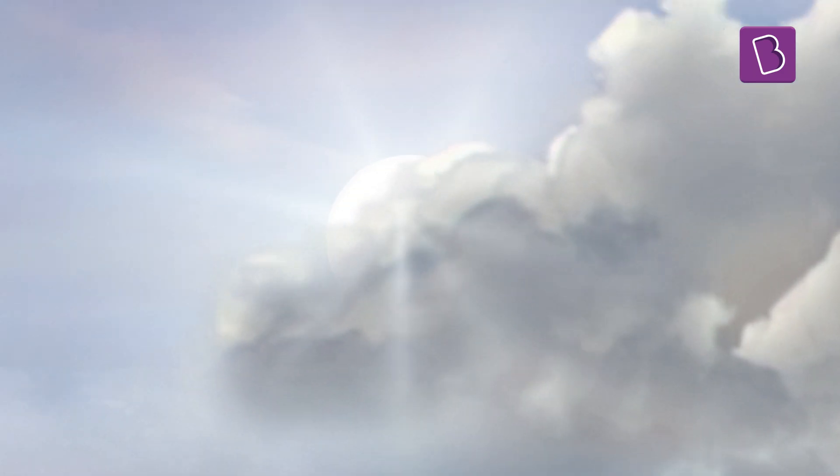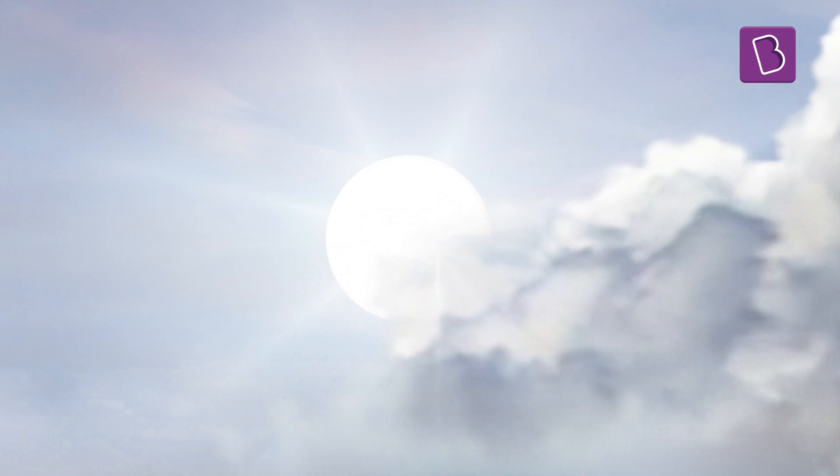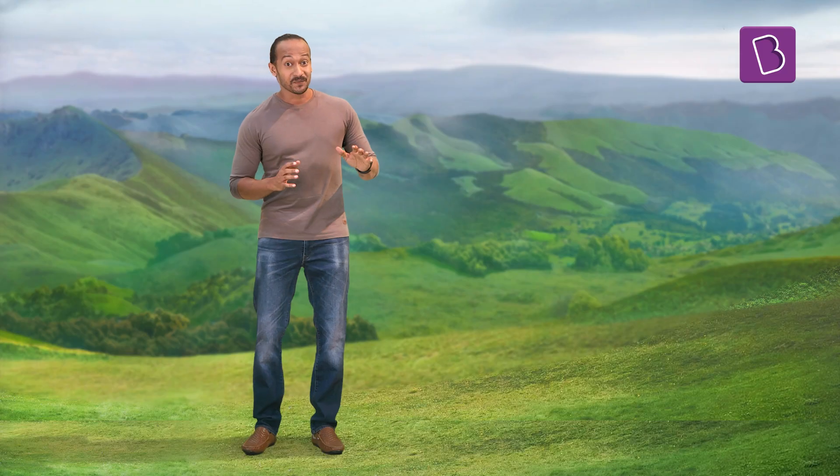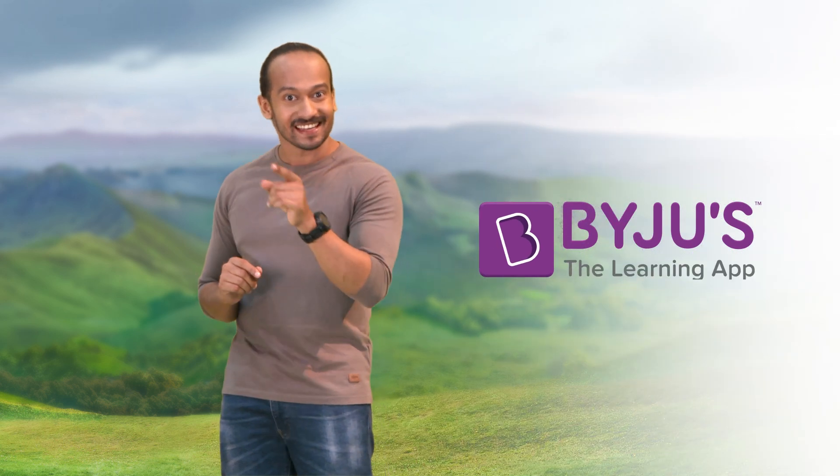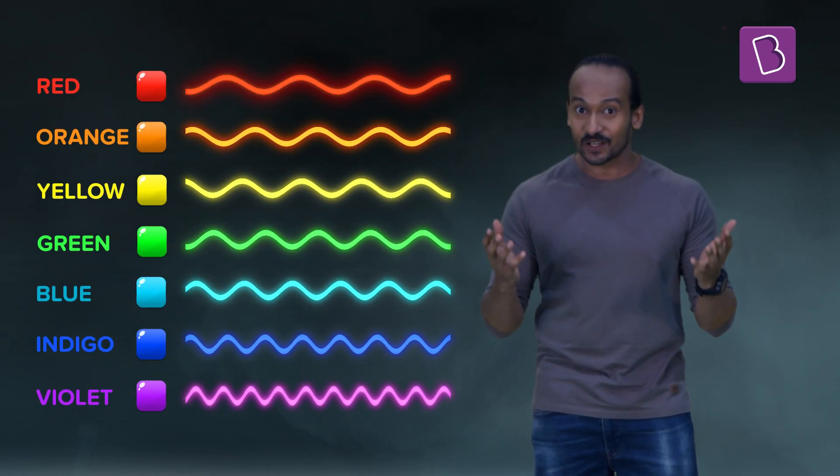To answer all of that, we have to first understand how rainbows are made, and to grasp that, we must first understand light itself. The sun actually emits white light; it just appears yellow to us. The sun's white light is in fact made up of seven colors, each having its own wavelength.